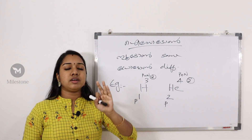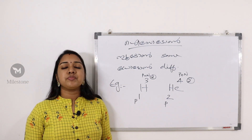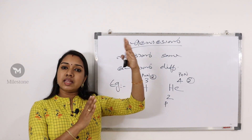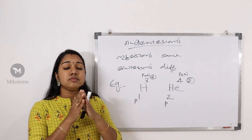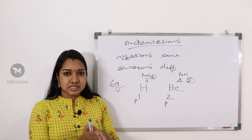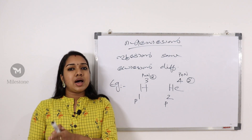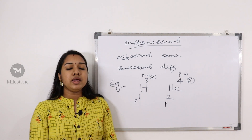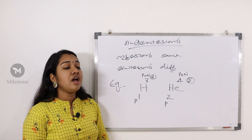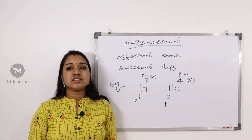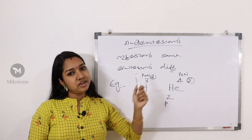Hydrogen has 3 isotopes: protium, deuterium, tritium. For isotope, the atomic number is the same, the mass number is different. For isobar, the mass number is the same, the atomic number is different. For isotone, the neutron is the same, the proton is different.